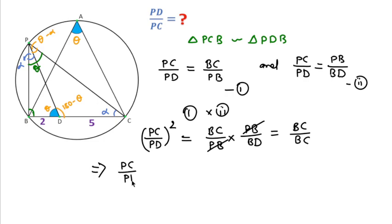PC over PD will be equal to square root of BC over BD. BC is what? BC is BD plus DC.